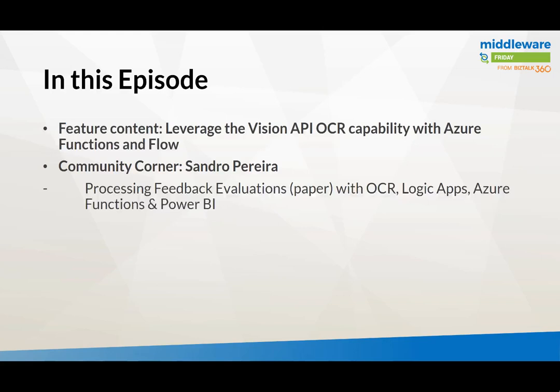In this episode, I'm going to talk about the Computer Vision API in Azure that has an optical character recognition capability within it. This will be combined with a function I'll wrap around that capability by pushing a receipt to it using Flow. We'll also talk in the Community Corner about a blog post created by Sandro Pereira around leveraging OCR using Logic Apps, Azure Functions, and Power BI.